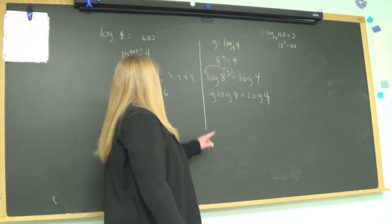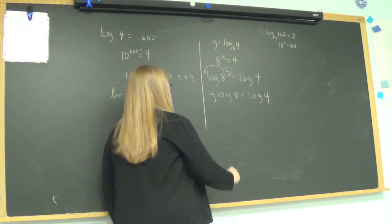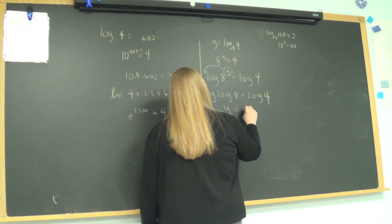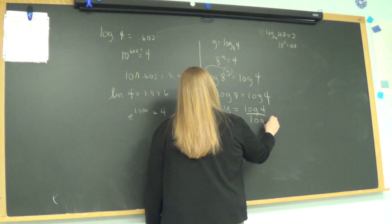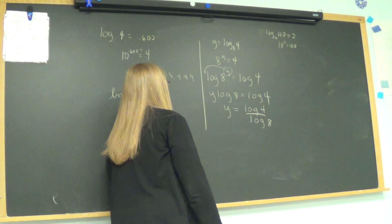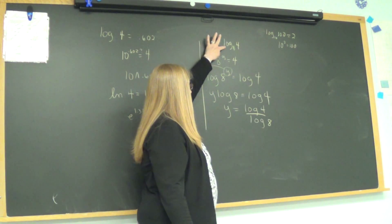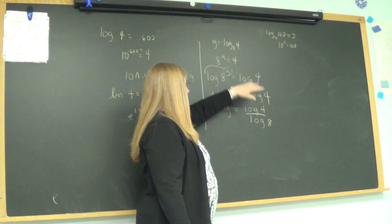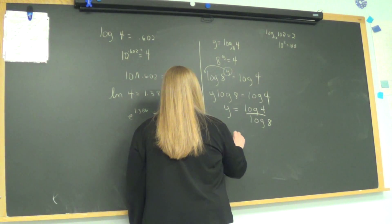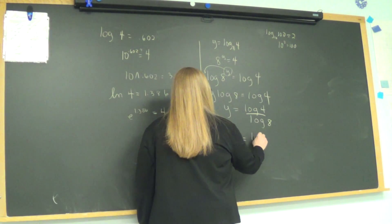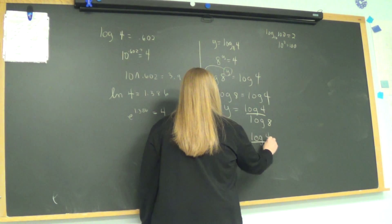And now I'm going to divide both sides by log of 8 and get Y by itself. And now I notice if Y equals this and Y also equals this, they're equal to each other. So I can write log to the base 8 of 4 equals log of 4 over log 8.